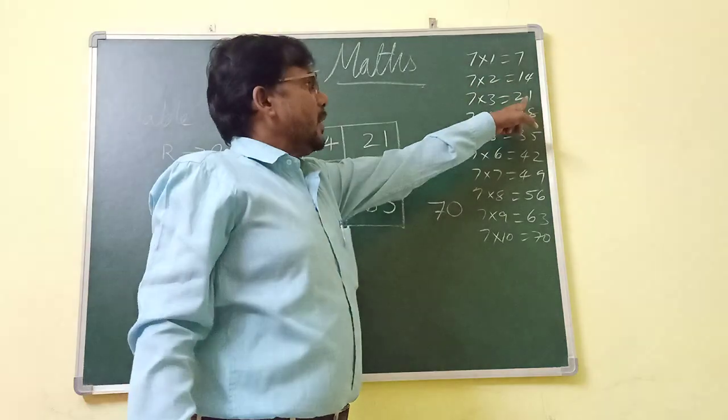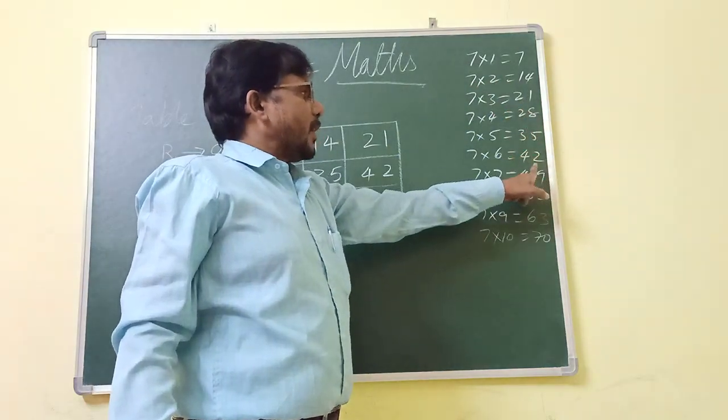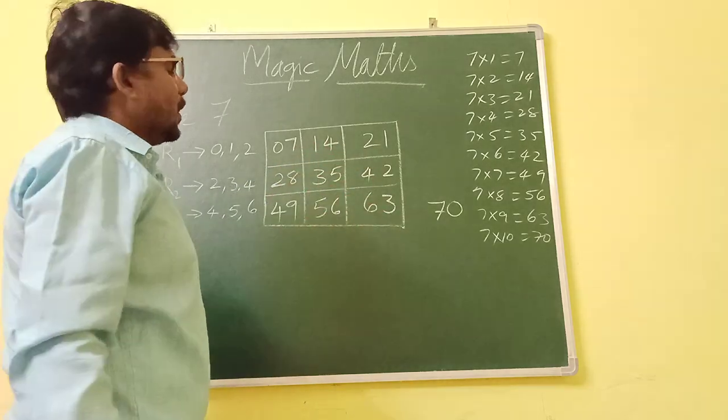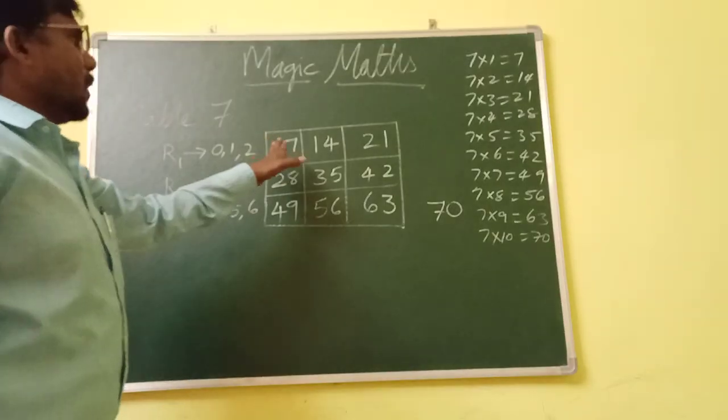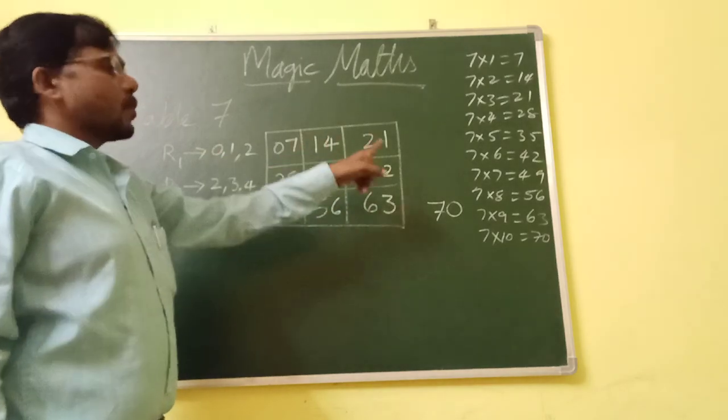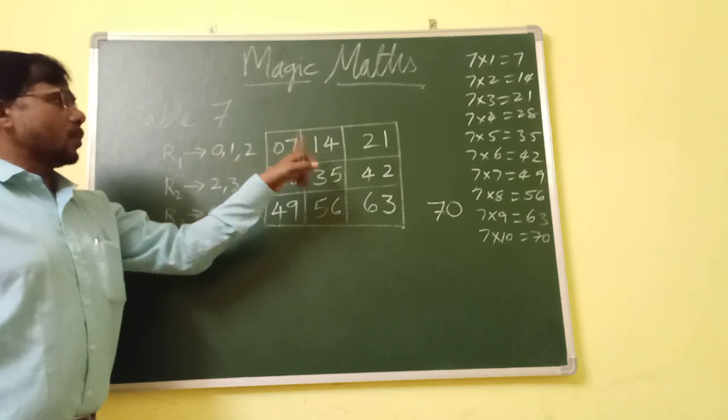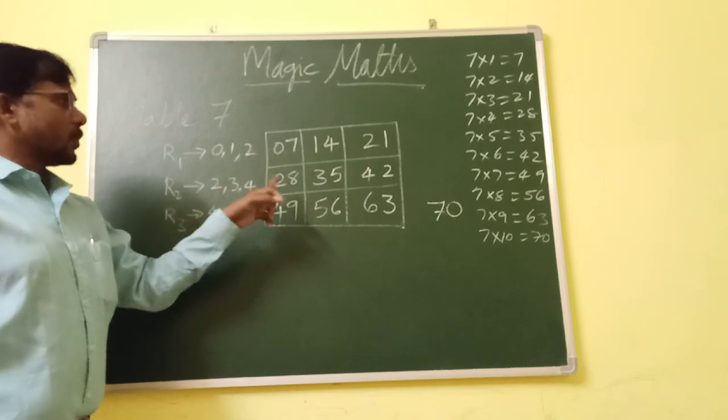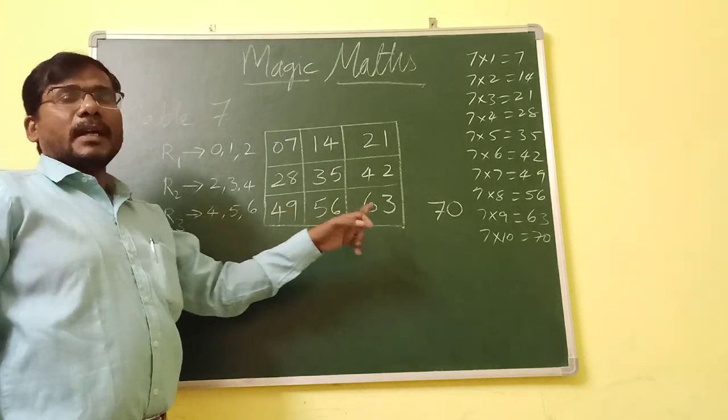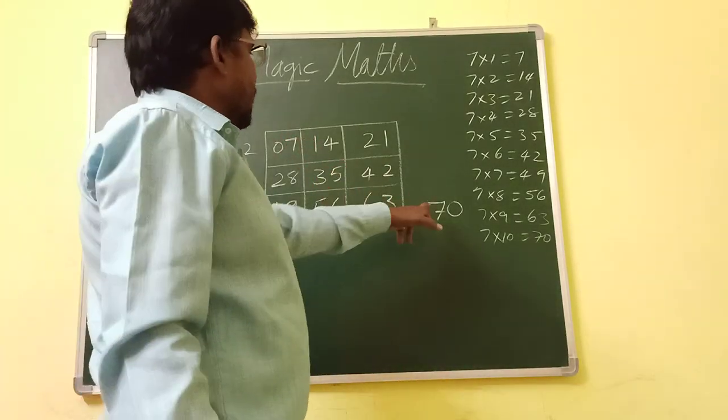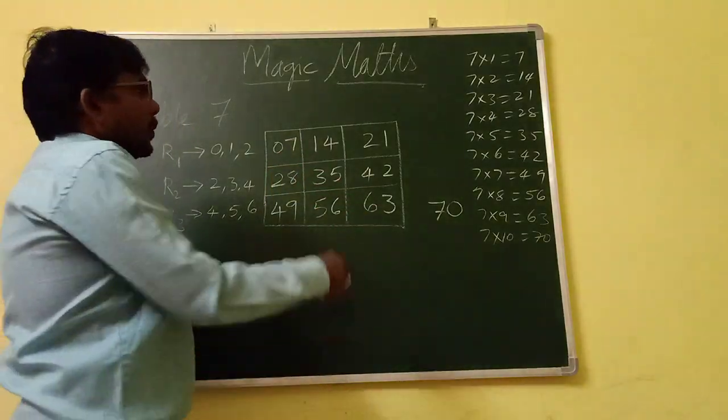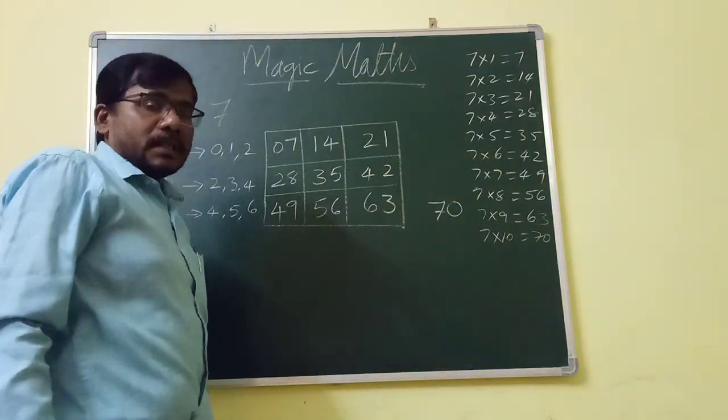I think you understood. 7, 1, 14, 21, 28, 35, 42. So simple like this, we should write 1, 2, 3, 4, 5, 6, 7, 8, 9. In first row, the magic numbers are 0, 1, 2. In second row, 2, 3, 4. In row 3 is 4, 5, and 6. The flip of 0, 7 is 7, 0. That is 70. This is table 7.